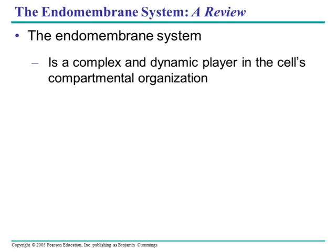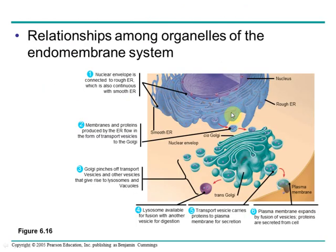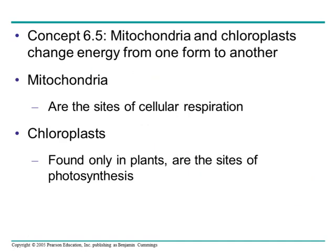Quick review: the endomembrane system is dynamic, constantly exchanging things between different organelles within those compartments. Here you see all of them together — the nucleus, the rough and smooth ER passing a vesicle off to the Golgi, which further packages it and sends it to the plasma membrane, where through exocytosis it releases those proteins destined for somewhere else.